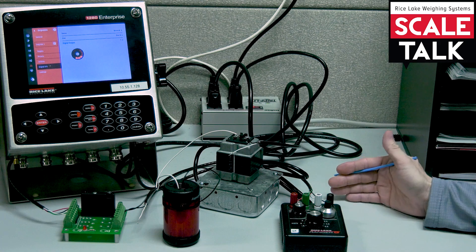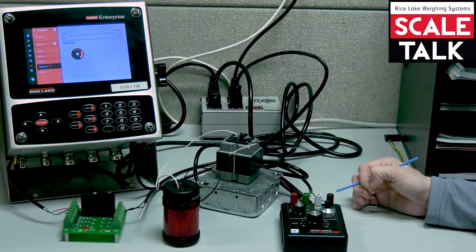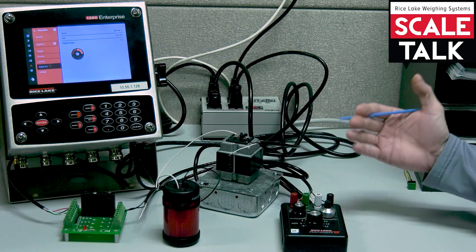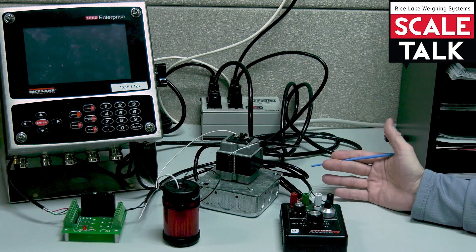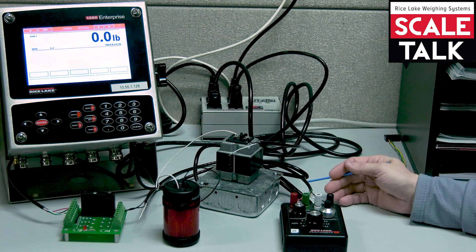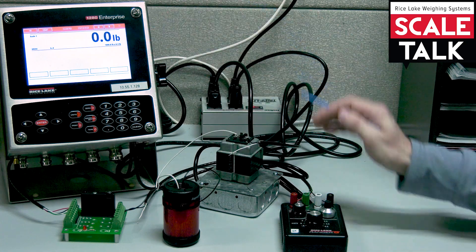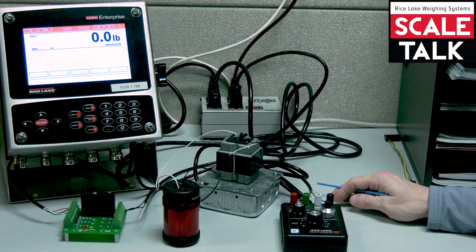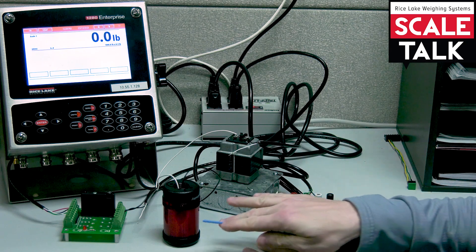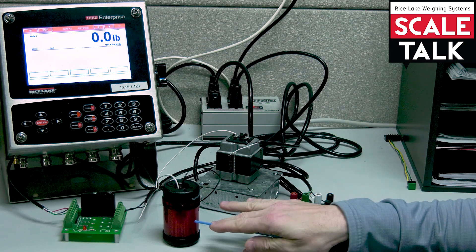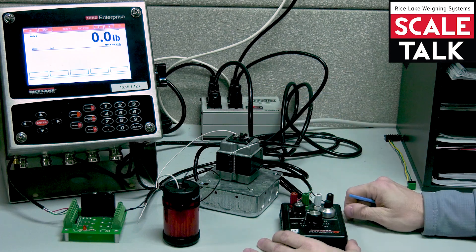Now remember, the free running set point is always being evaluated. This was a 500 pound set point set to trip higher. So in this case I have no weight on the display currently. When I ask it to trip higher at 500 pounds, my expectation is that my light is going to come on once I exceed 500 pounds.